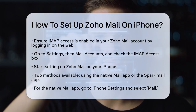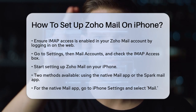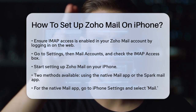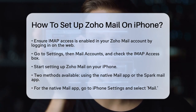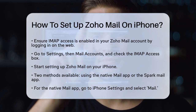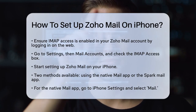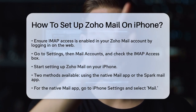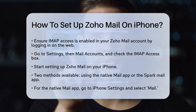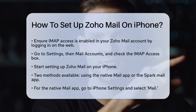First, you need to ensure that IMAP access is enabled for your Zoho Mail account. To do this, log in to your Zoho Mail account on the web, go to Settings, then Mail Accounts, and enable IMAP access by checking the box.